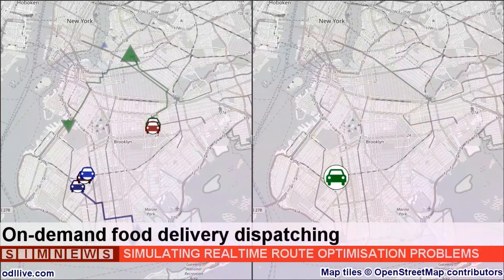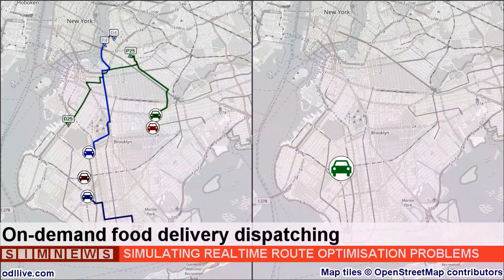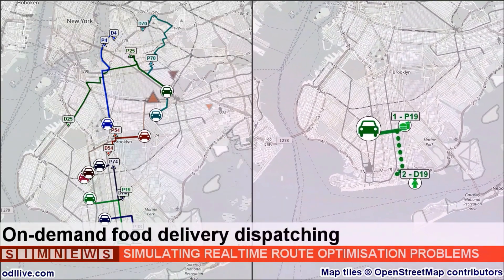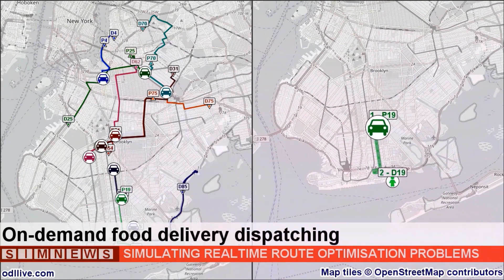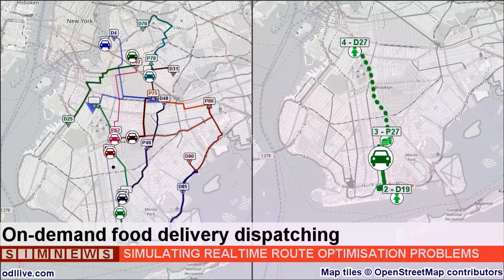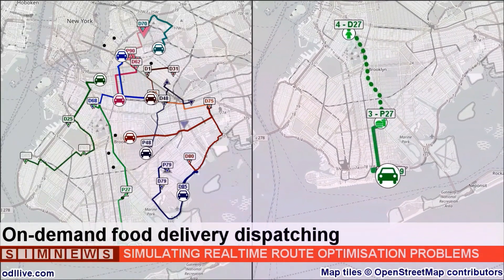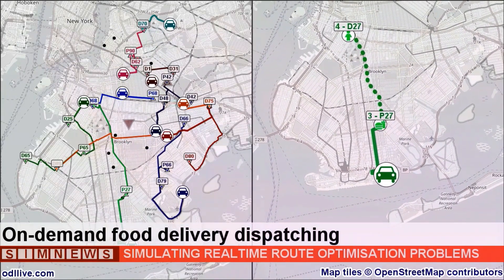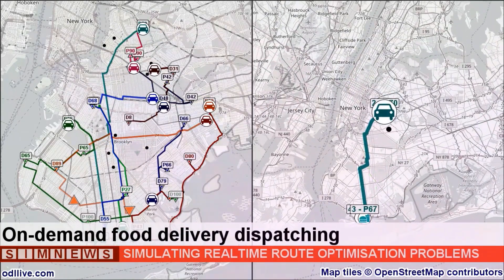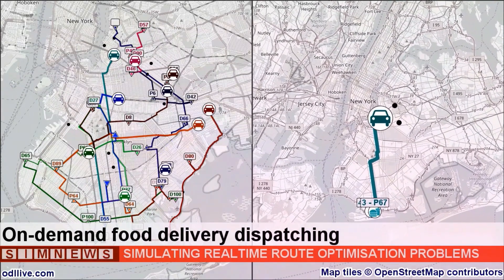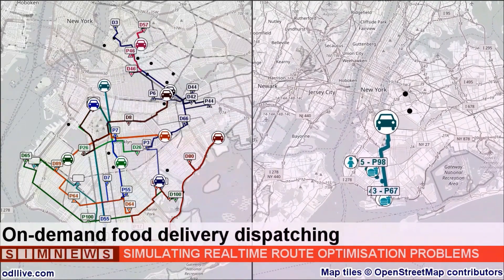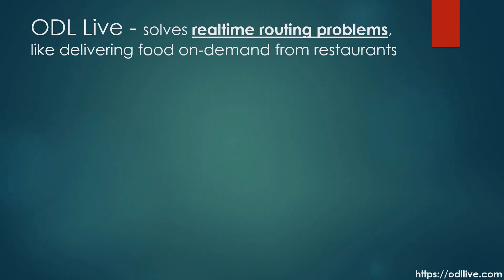ODL Live is an engine for optimizing delivery routes. This video showcases a simulation we created of an on-demand food delivery network delivering meals from restaurants to customers. The scheduling and dispatching is controlled by the ODL Live engine embedded within the simulator. ODL Live solves real-time route optimization problems such as delivering takeout food on-demand from restaurants.